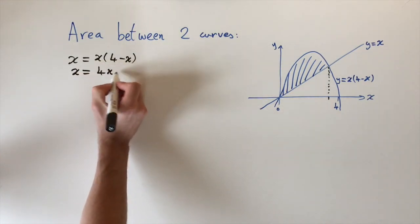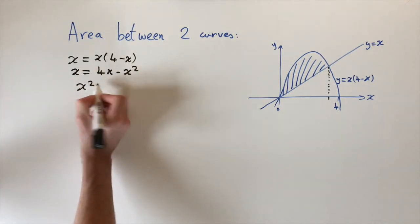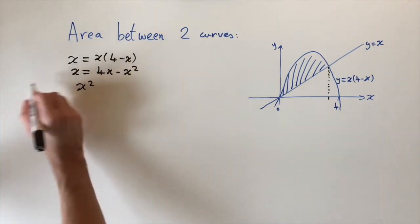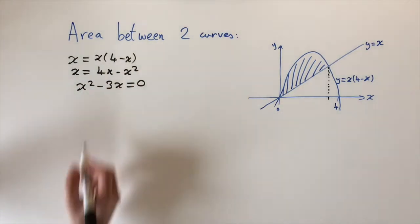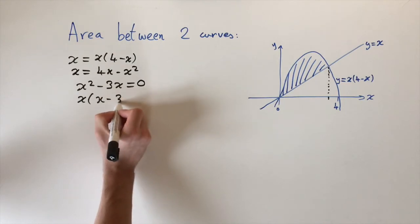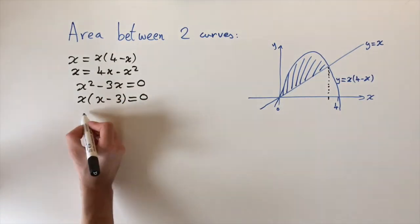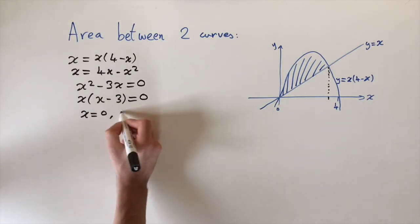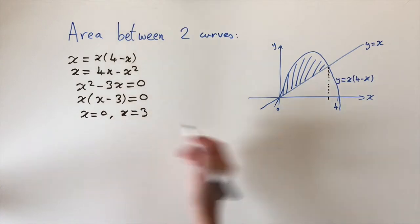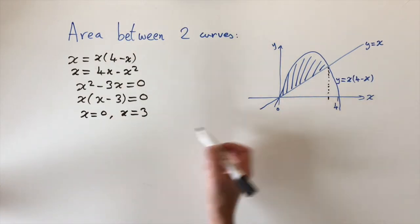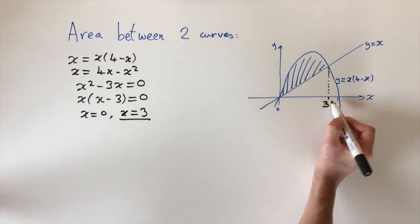Expanding gives x(4 − x) = 4x − x². Putting everything onto one side: x² − 3x = 0, then factoring: x(x − 3) = 0. This tells us the intersections are at x = 0 and x = 3. x = 0 is where they intersect at the origin, and x = 3 is the intersection point we need on the right.